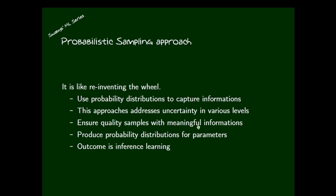This approach addresses uncertainty at various levels. When using probability, we can address sample collection uncertainty — which data point should be selected and which should be discarded. A sampling algorithm will address that uncertainty first. The second level is sampling parameters — the values of parameters also have some uncertainty that can be addressed using this probability approach. So the probabilistic approach can address uncertainty at both the sample collection level and the sample parameters level.